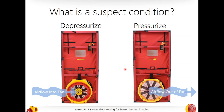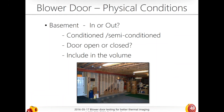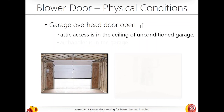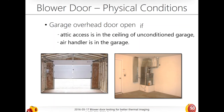If you have a suspect condition, certain organizations will ask you to actually pressurize — rather than depressurize. Physical conditions matter: doors open or closed, knowing the volume of the house, whether there's a garage overhead or attic access in the ceiling of an unconditioned garage, or an air handler in the garage. A key thing the IR camera has in common with a differential pressure gauge like the DM32 is that we're always talking about the difference between two things.